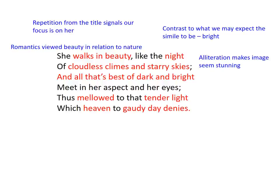The third line — 'and all that's best of dark and bright' — her beauty contrasts to daylight; it's strikingly different. Dark and bright: it stands out once more. They often say that the eyes are the window to the soul, and it says 'meet in her aspect and her eyes,' so we really see that she's something different from just the mere gaze of her. But what makes this poem different is that it doesn't just obsess about the superficiality of her looks.